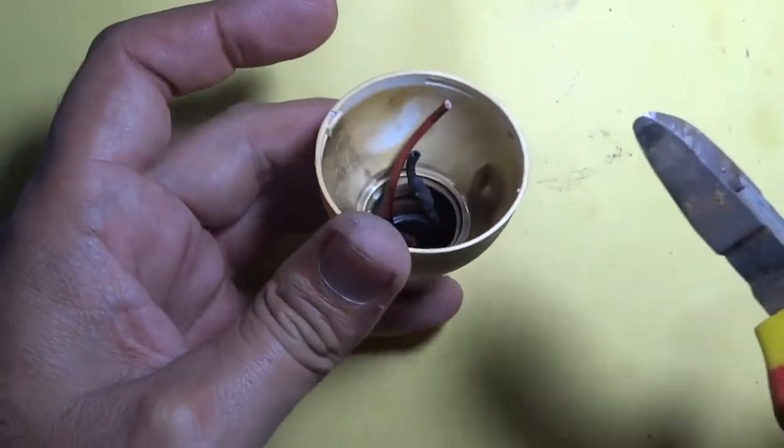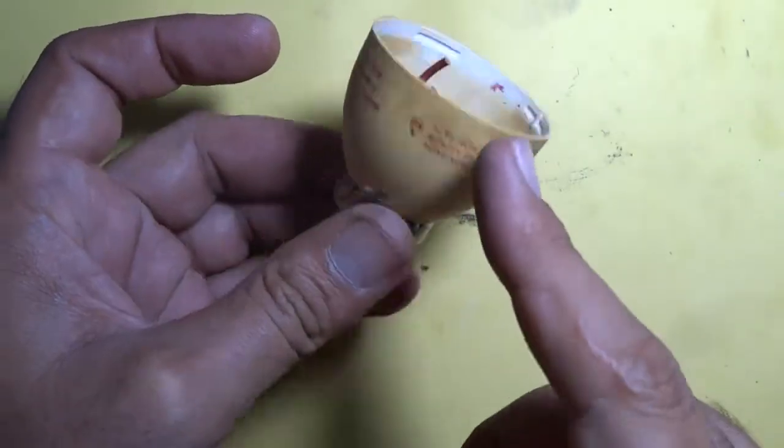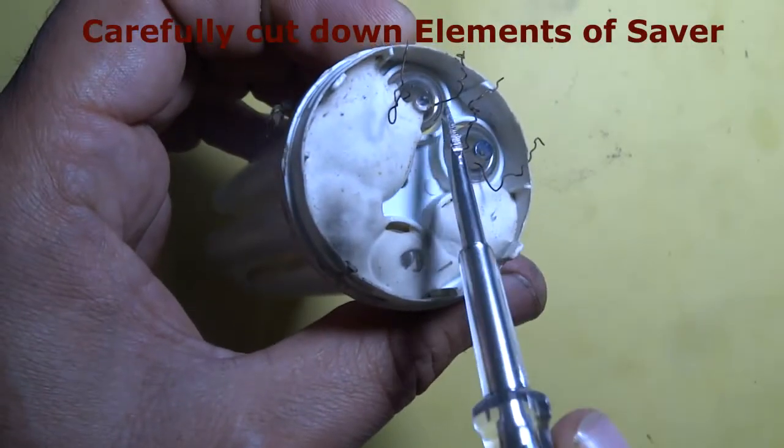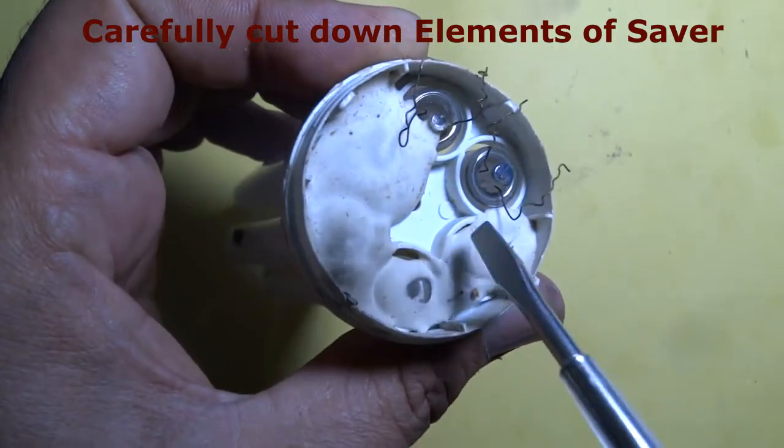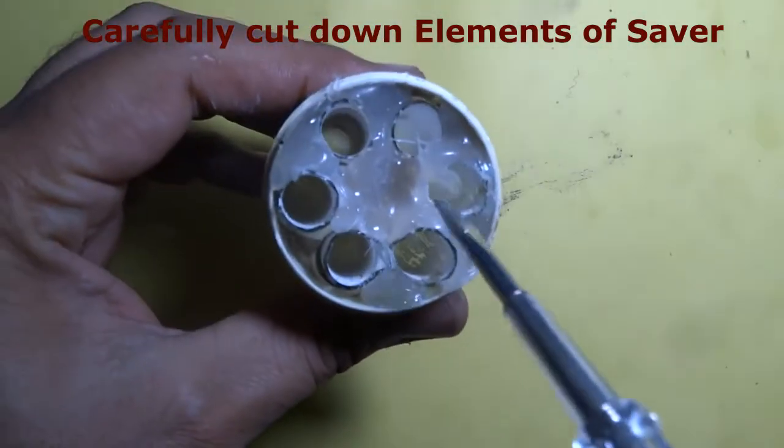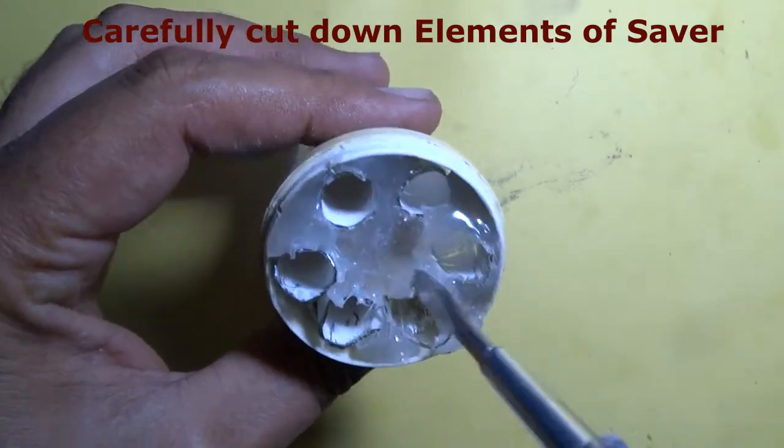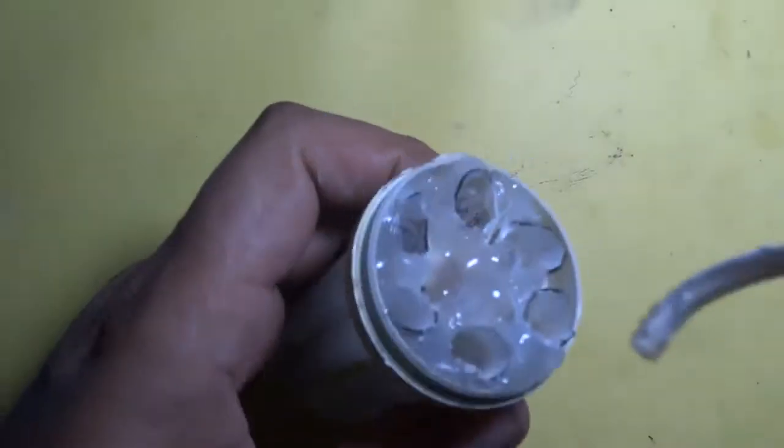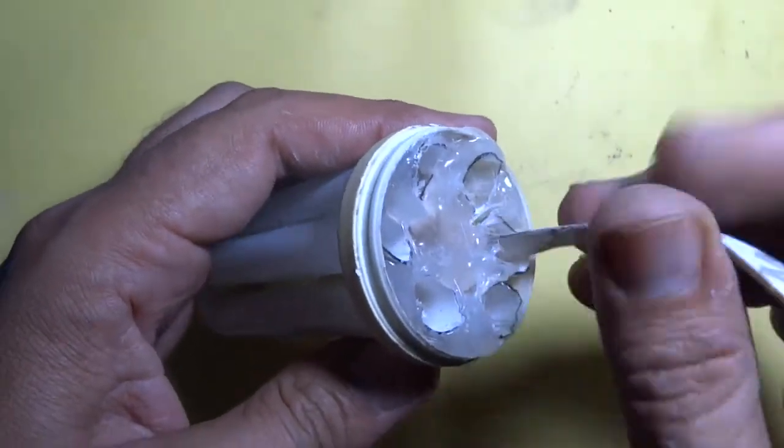These are the main parts of the energy saver. First of all, cut down these elements of the saver rod, but please be careful, it can injure your hands while cutting. Now it has been opened. Now I will insert the LED strip into all rods like that.